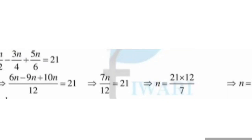Now we multiply 12 into 21 and divide by 7. So n is equal to 21 into 12 upon 7. Simplifying: 7 threes are 21, and 12 threes are 36. So the answer is n is equal to 36.